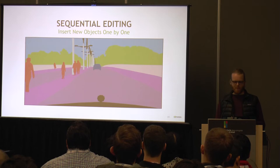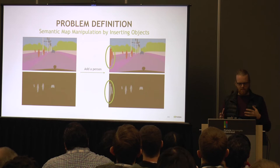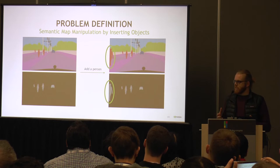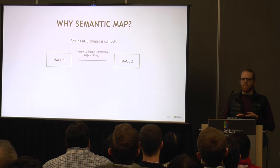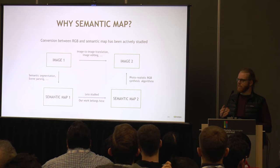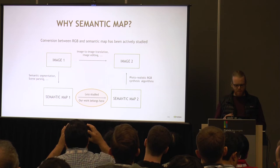The problem definition we want to address is: given an input with some segmentation and some context, where can we put an object? This problem falls into image-to-image translation, but instead of working in the RGB space, we're working with a segmentation. So representations are a little bit simpler. This sort of semantic map to semantic map translation has not been studied as much, so that's why we're really interested in digging into that problem.